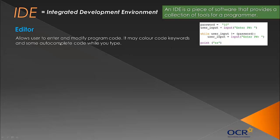An IDE has several tools that make it easier for a programmer. The first we need to know about is an editor — more specifically a text editor — which allows the user to write and modify code. One feature it may have is colour-coding: functions like 'input' and 'print' get coloured in Python, strings are made green, and 'for' loops are made orange. This helps when learning, makes the code nicer to look at, and makes mistakes easier to spot. Some IDEs also auto-complete code as you type.